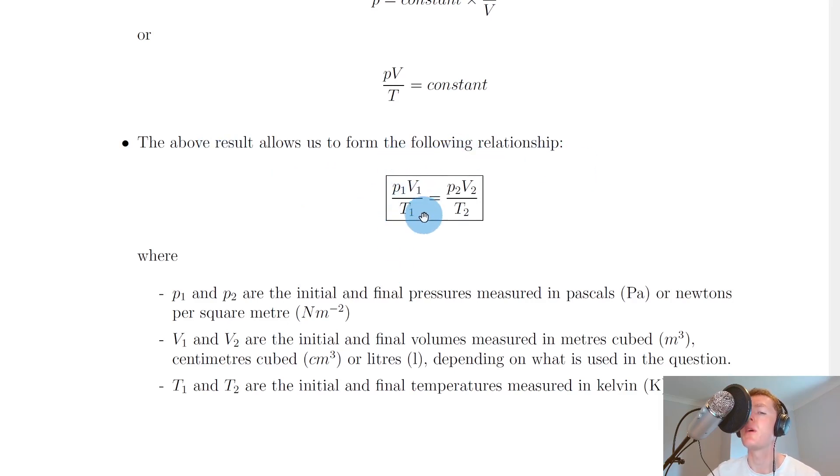And we therefore have that the above result allows us to form the following relationship. So we have P1V1 over T1 equals P2V2 over T2. And notice that this could also equal P3V3 over T3, and so on, but we're only ever going to deal with initial and final values of these things so we can stop at the number 2 for the subscripts.